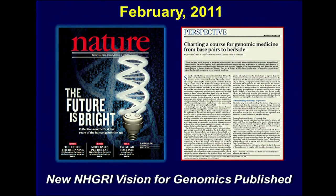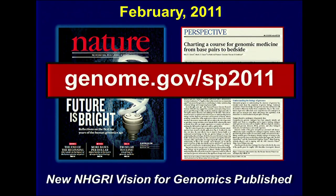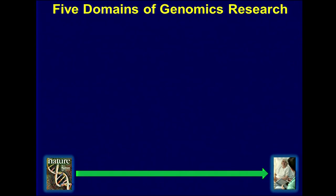If you've not seen this strategic plan, I would urge you to download it — a convenient URL is there for you. What we heard in 2010 leading up to the strategic plan in 2011 was very different than what we heard in 2002 leading to the 2003 plan. The difference was that it was now time to be more specific and sophisticated in describing how to actually apply genomics to clinical medicine. At the end of the day, we found it useful to describe a research agenda organized into five major domains of research activities.